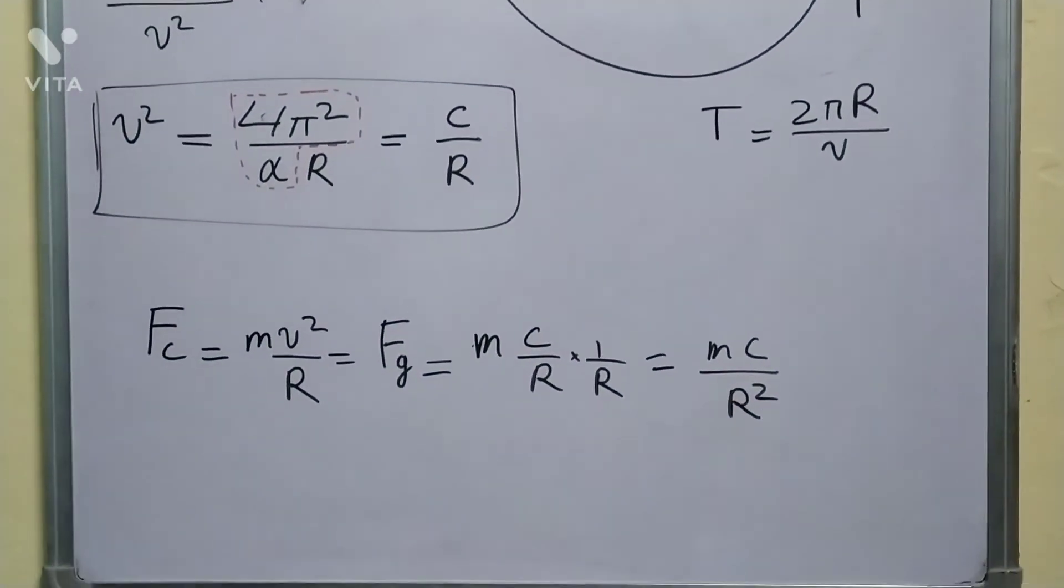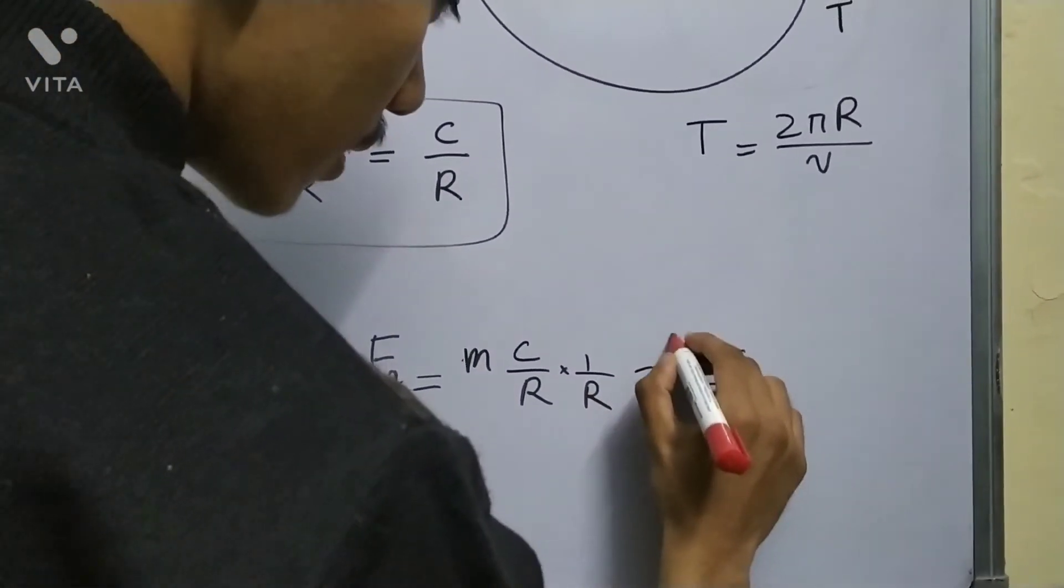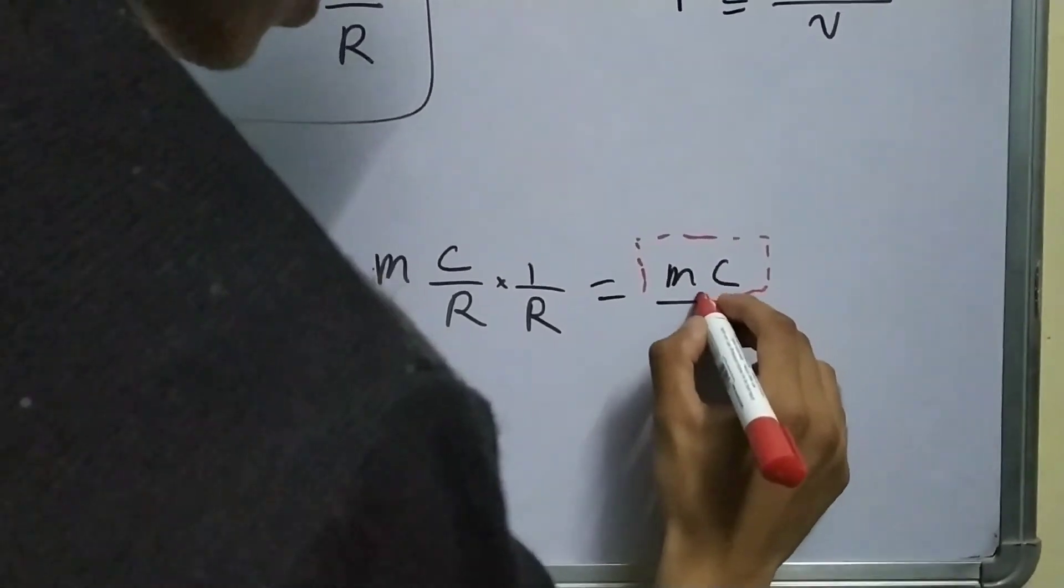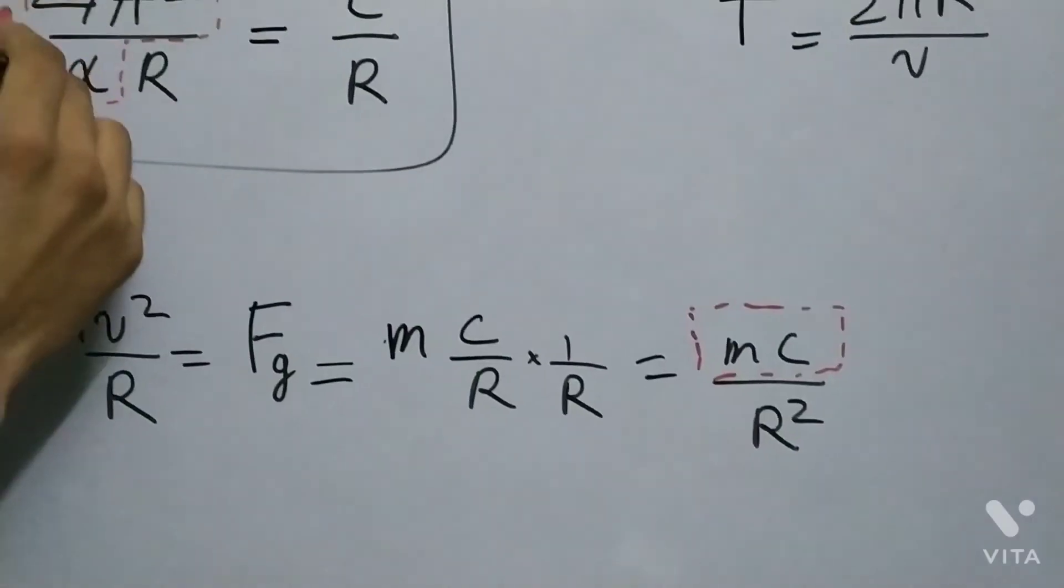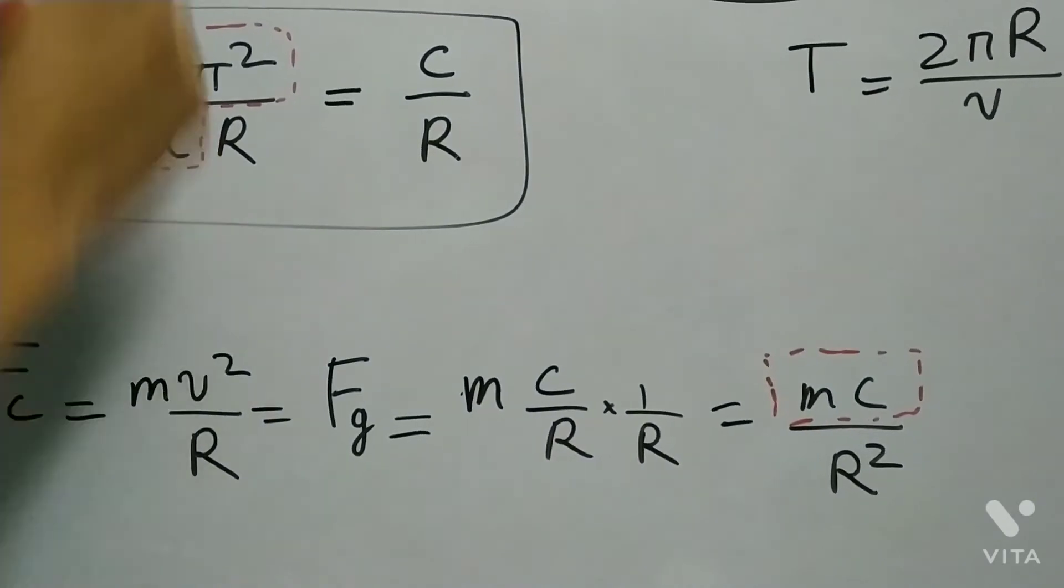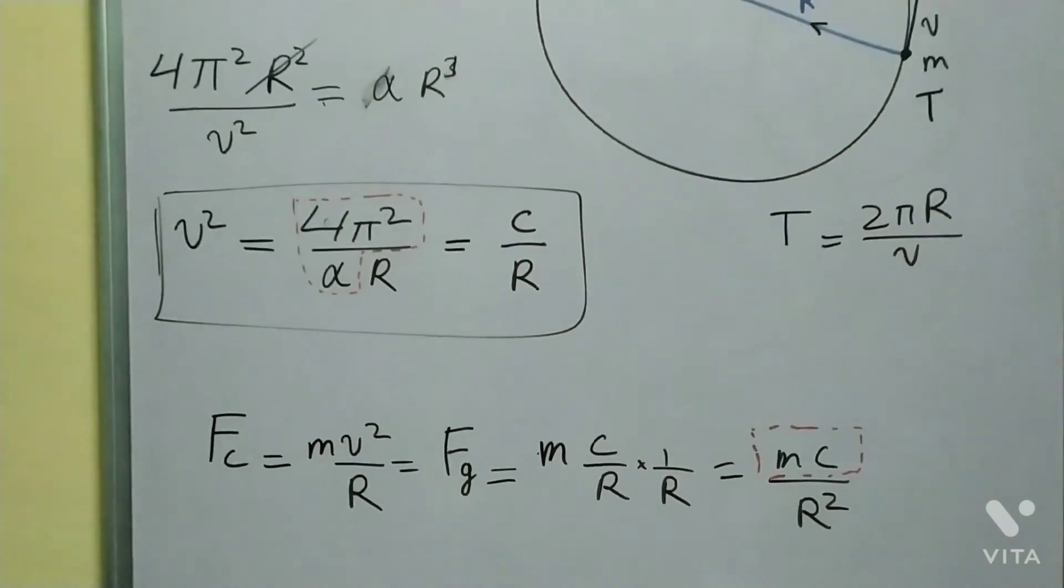Now, m is a constant—mass of the planet doesn't change—and c is also constant (c was this term 4π² upon alpha, and alpha itself is a constant).